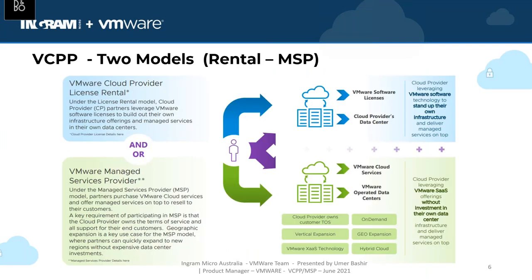VCPP has had quite a journey — it used to be called SPP, VMware Service Provider Program, and now it's called VCPP, VMware Cloud Provider Program, reflecting the expansion of the cloud provider domain especially in Australia. VCPP has two distinct segments: one is called Rental and the other is called MSP. The rental is the blue part on the top of the screen, and the MSP is the green part at the bottom.